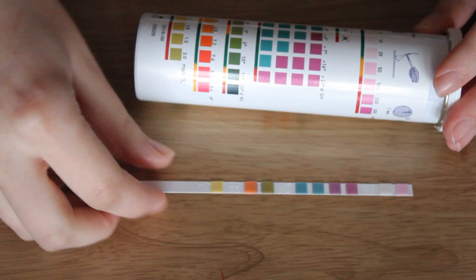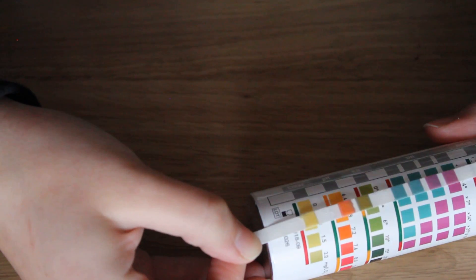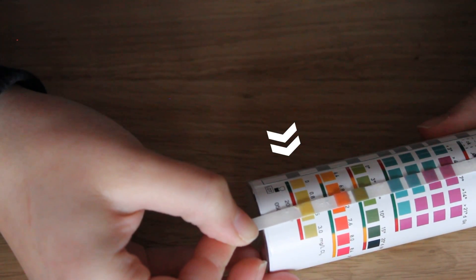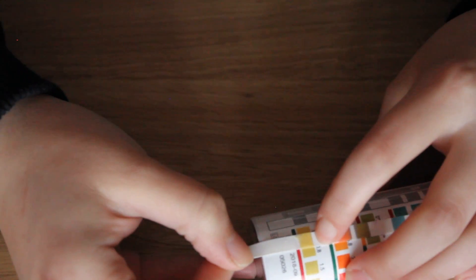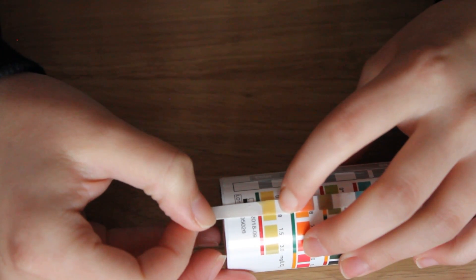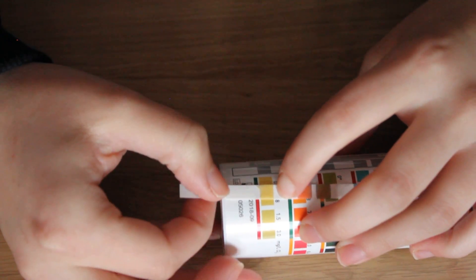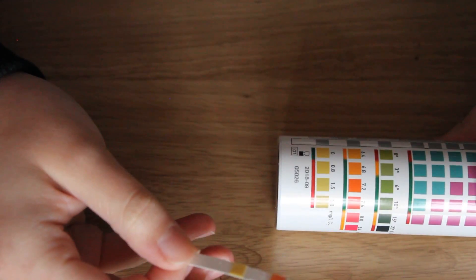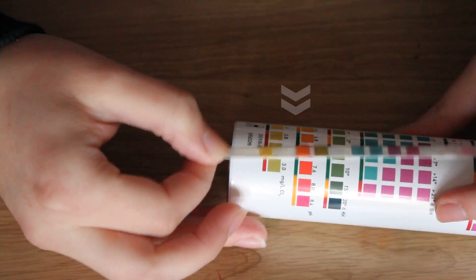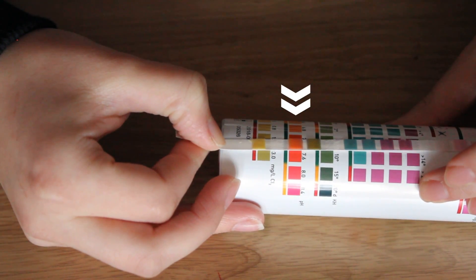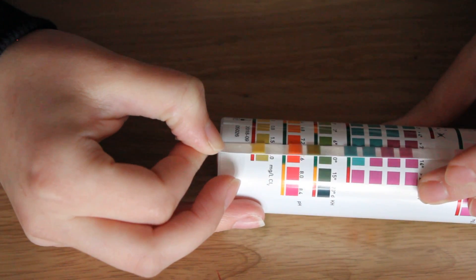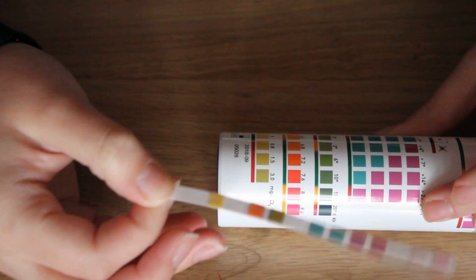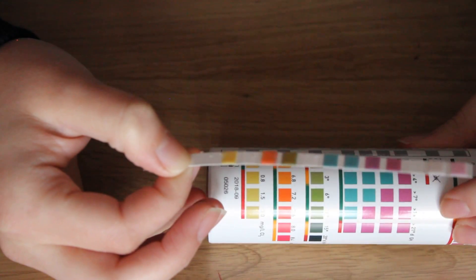The first one we will look at is chlorine. If we compare the first one I would say the chlorine is probably zero and that doesn't surprise me because I'm using quite a decent dechlorinator. The next one is pH, I would say this is around 6.8 to 7.2 which is pretty good.